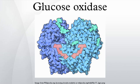GOX is a dimeric protein, the 3D structure of which has been elucidated. The active site where glucose binds is in a deep pocket. The enzyme, like many proteins that act outside of cells, is covered with carbohydrate chains.